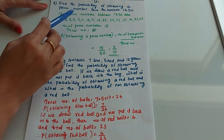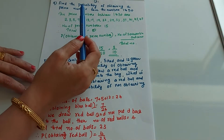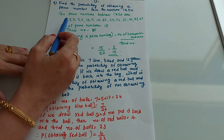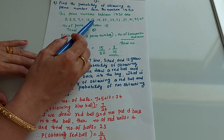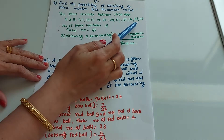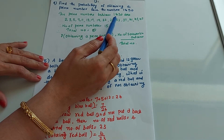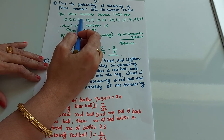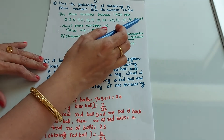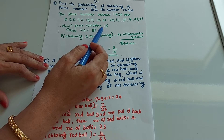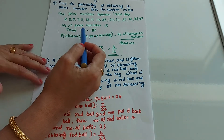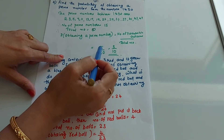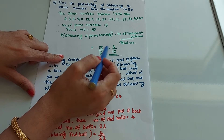Next question: find the probability of obtaining a prime number from the numbers 1 to 50. First check how many prime numbers are between 1 and 50. We know 1 is not a prime number. The prime numbers are: 2, 3, 5, 7, 11, 13, 17, 19, 23, 29, 31, 37, 41, 43, and 47 — that is 15 prime numbers. So probability equals 15 by 50, which simplifies to 3 by 10.